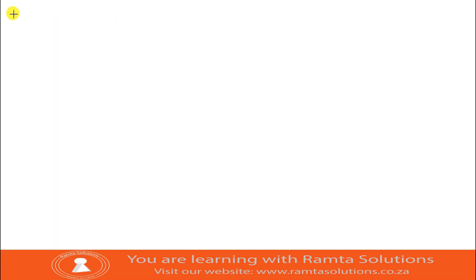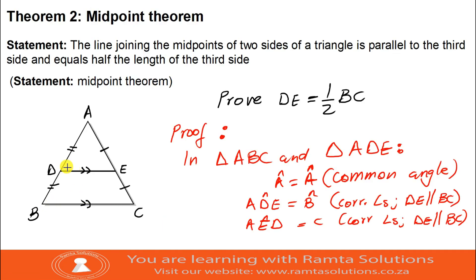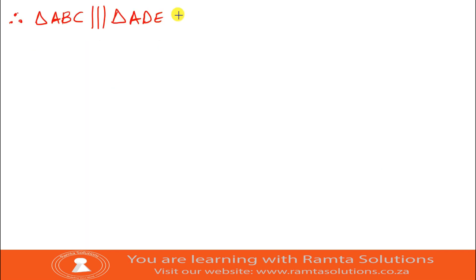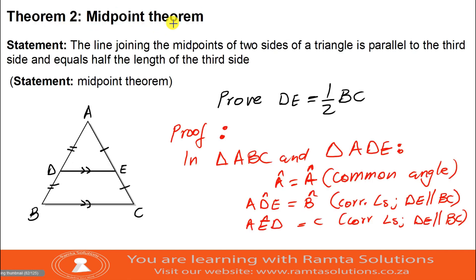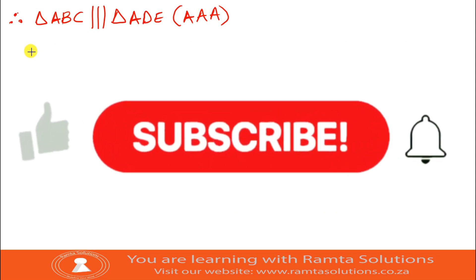Therefore, triangle ABC is similar to triangle ADE. The reason is Triple A — all three angles are equal. It is okay to compare them in this order, as these are similar triangles.